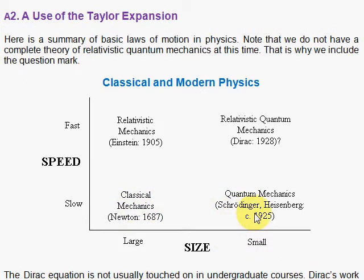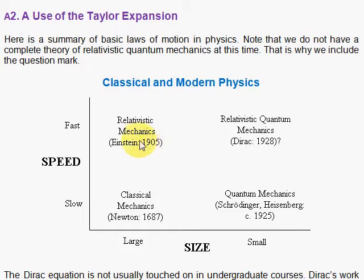The laws of Newton do not work in the atomic realm, and they break down in the relativistic or superfast regime. It was Newton's laws that got extended in that region by Albert Einstein in 1905 in the theory of special relativity. Schrödinger and Heisenberg gave us two formulations of quantum mechanics around 1925, which described the mechanics of the microscopic.